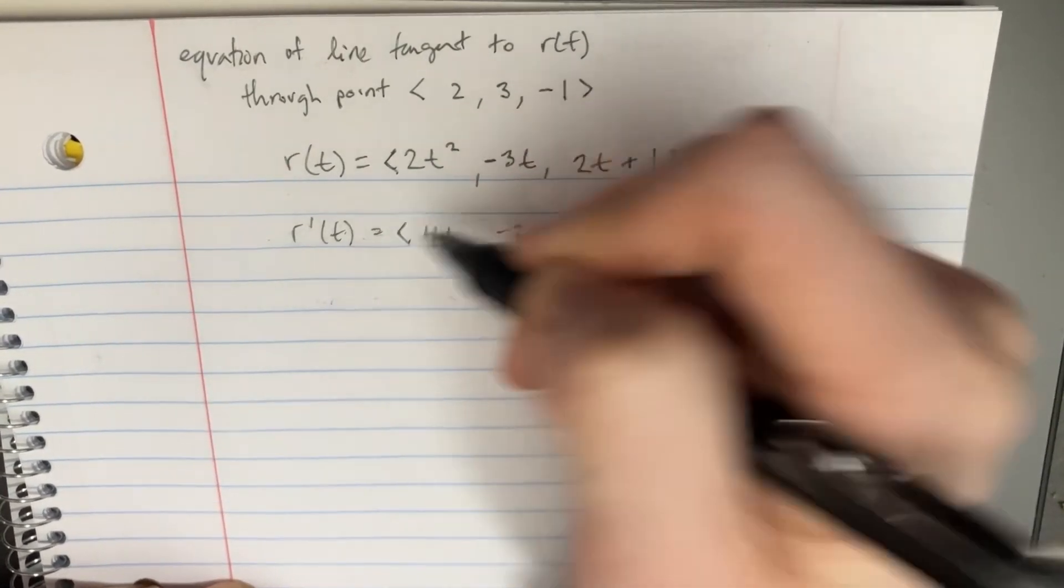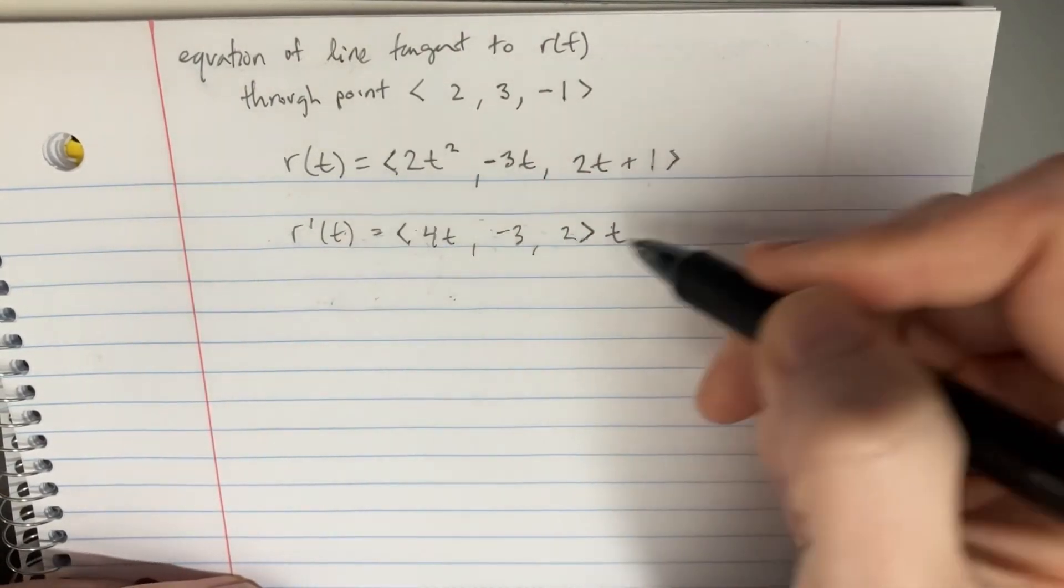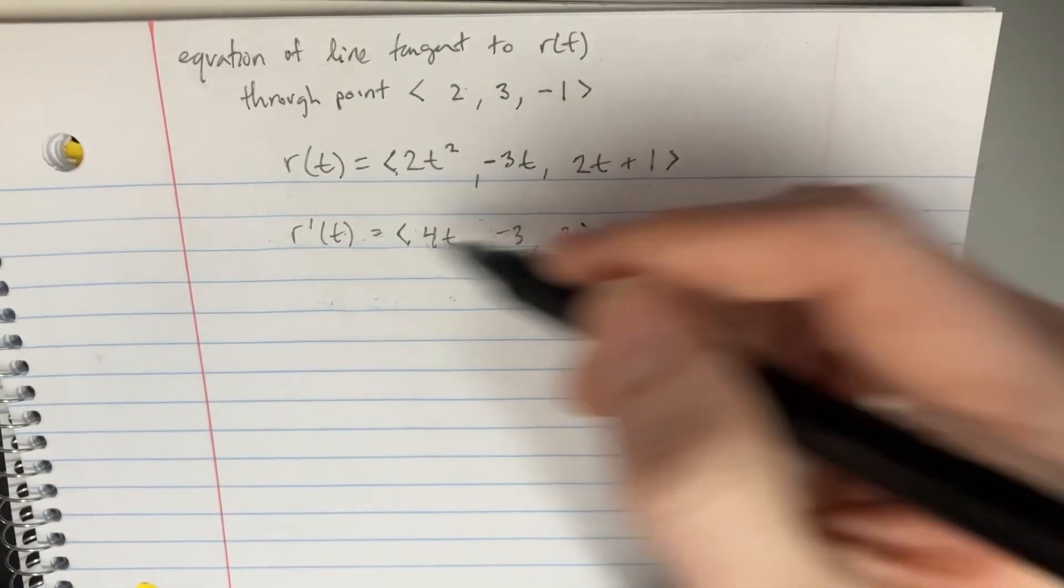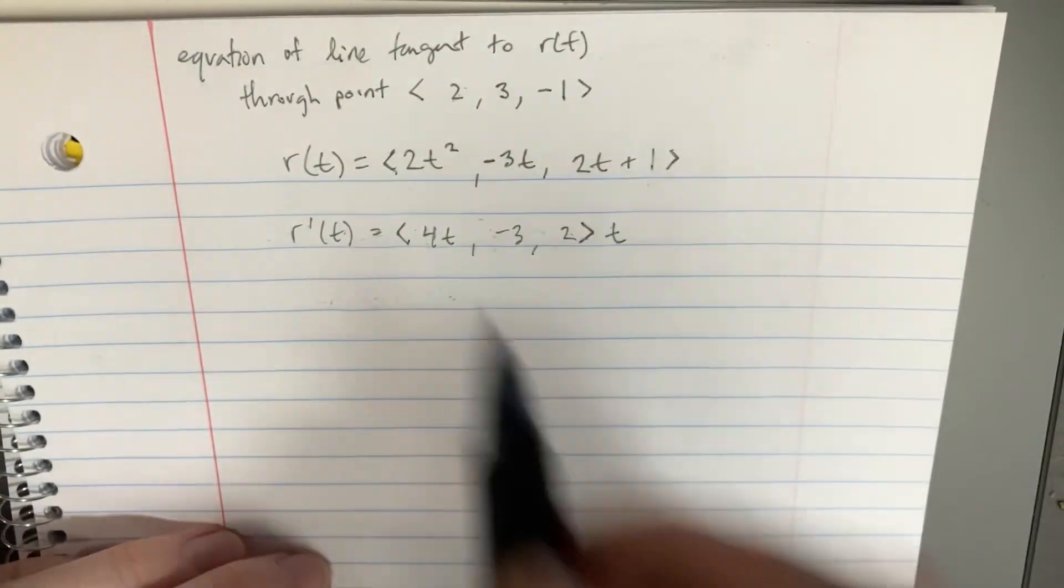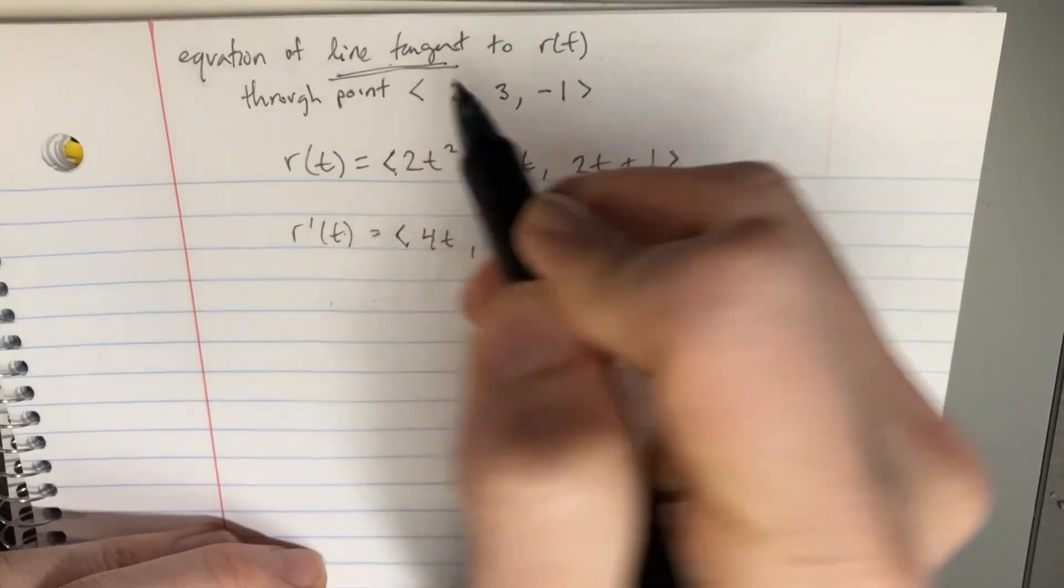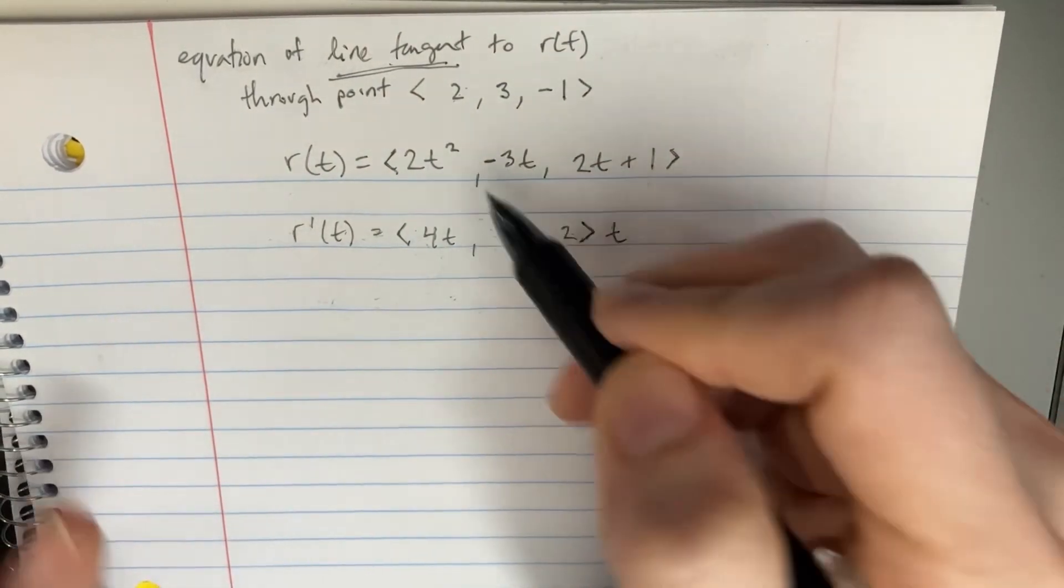But then the problem is we would have to multiply this by a t in order to get our next portion, so we could use that point and this. But we'd get a t squared over here if we did that. And remember, this is just a tangent line, so we don't want a t squared here. So this is a problem.